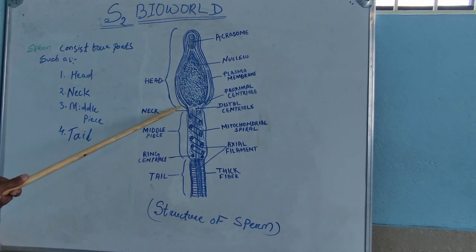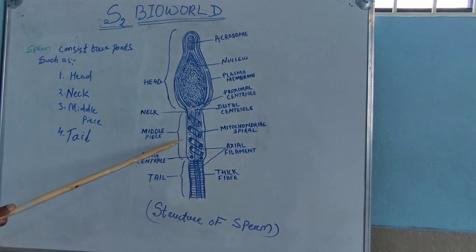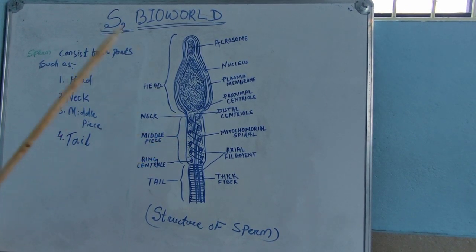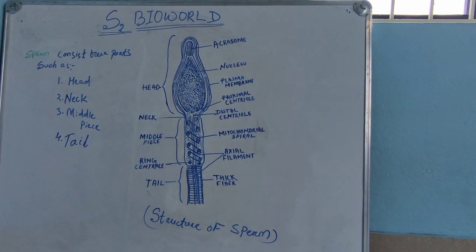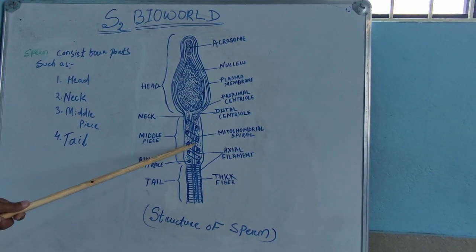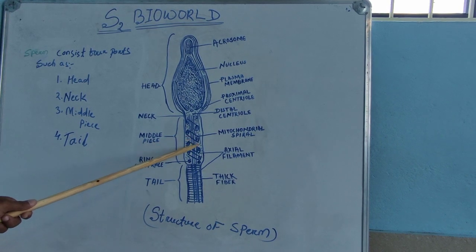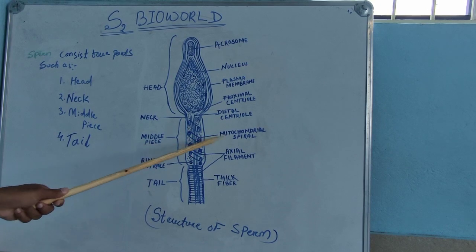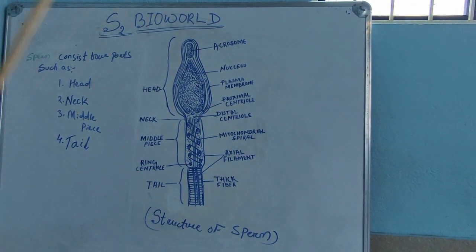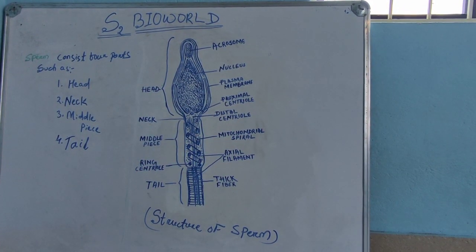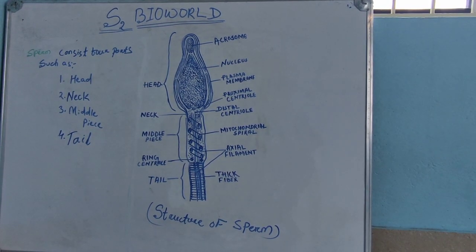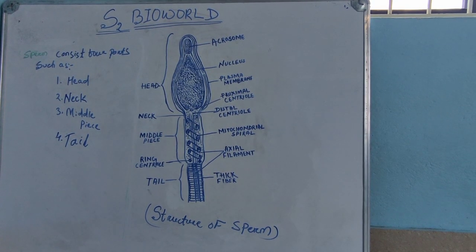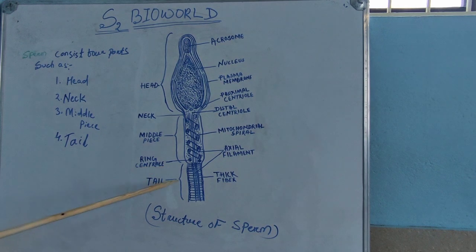The next part of the sperm is the middle piece, which is cylindrical. The middle piece contains mitochondria arranged around the axial filament, and these are called the mitochondrial spiral. It provides energy for the movement of the sperm, because mitochondria is known as the powerhouse of the cell.